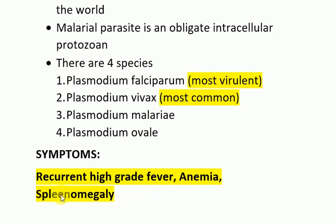The symptoms of malaria include a triad of recurrent high-grade fever, anemia, and splenomegaly. There are some other symptoms as well, like nausea, vomiting, dehydration, jaundice, renal failure, hypotension, hypoglycemia, dizziness, and delirium. There is also a brief episode of chills followed by a high-grade fever and a spike of fever.